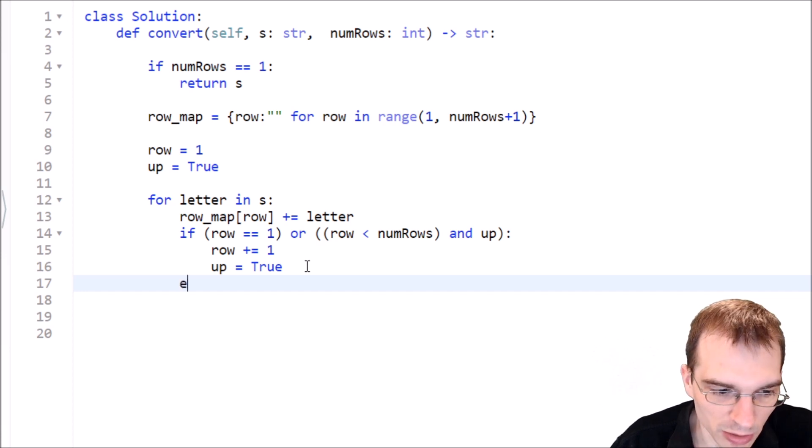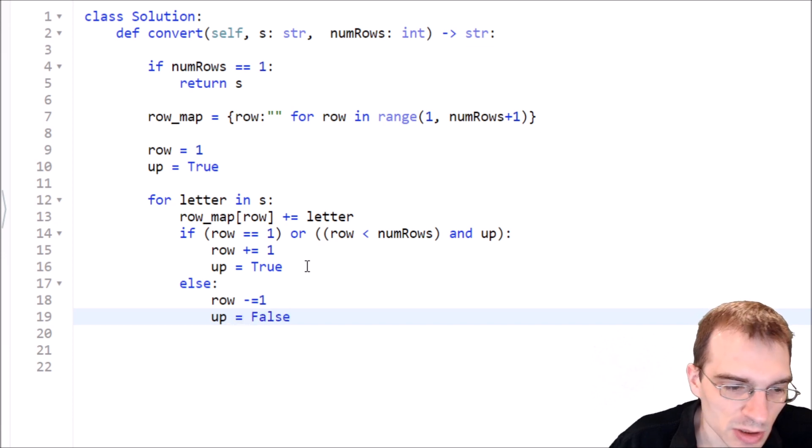We handled all the logic behind anytime we need to move up. So otherwise, we're just moving down. Else, we're going to say row minus equals one, and up for now is false. That's going to say anytime we're not supposed to be moving up, we're moving down. This should take care of the zigzag logic.